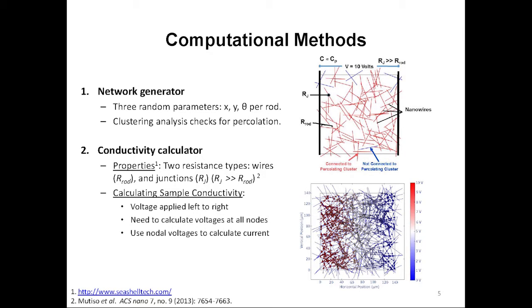The image on the right shows the sample generated by my program. As I mentioned, voltage is applied from left to right. I've also indicated the locations of a sample junction resistor and a rod resistor. The image to the lower right shows the results of my conductivity calculation. I've mapped the value of the voltage to every node on a color map, with red being the highest voltage and blue being the lowest. As you can see, voltage decreases roughly linearly along the direction of the applied voltage from left to right, as we would expect.